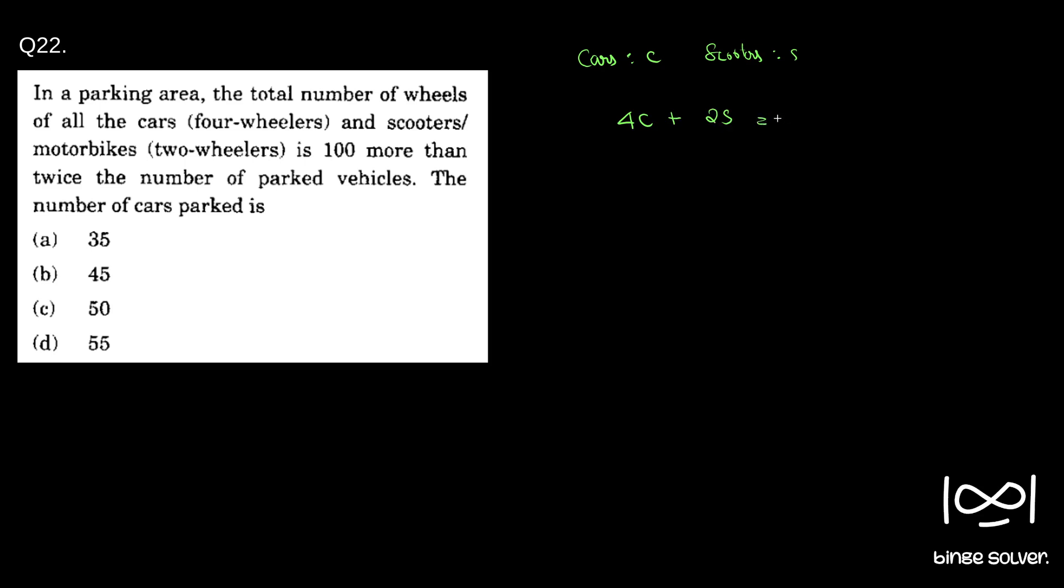Given as 100 more than twice the number of parked vehicles. So twice the total parked vehicles becomes 2(c + s). The total cars plus scooters is the total parked vehicles...